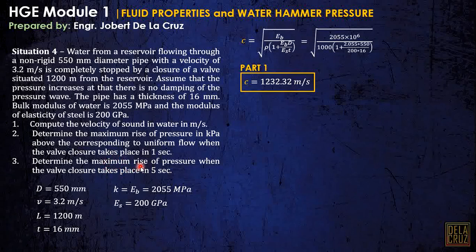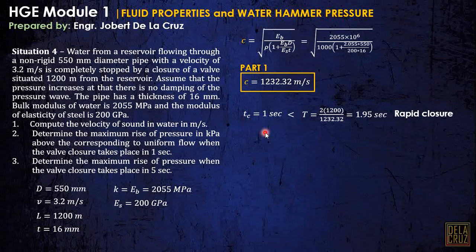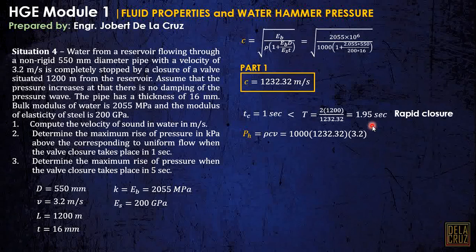For number two, determine the maximum rise of pressure when the valve closure takes 1 second. We have TC = 1 second. We investigate: the time required to avoid water hammer is T = 2L/C = 1.95 seconds. TC is less than T, meaning this is a rapid closure. For rapid closure, we do not need to recalculate C — directly use ρCB and substitute to get the water hammer pressure.